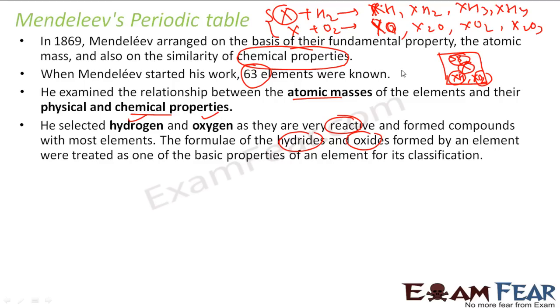Once he had all these values — knowing all 63 element names, their atomic masses, and their hydride and oxide forms — he grouped these elements based on their hydrides and oxides, which were the critical parameters.